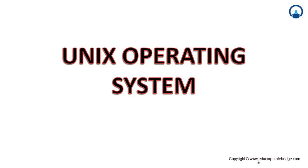An operating system is a set of programs written in such a way that it can communicate with the system. You have a keyboard, you have a mouse, you have a camera, and different things attached to the computer. How these things communicate with the system is what is written in the operating system.